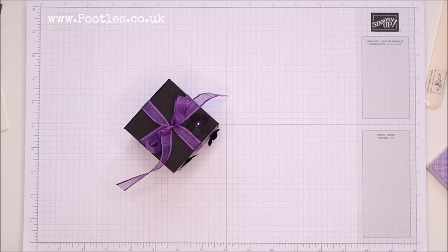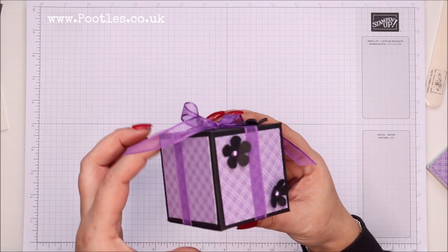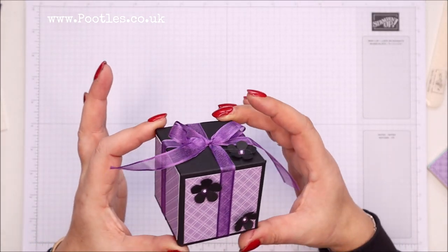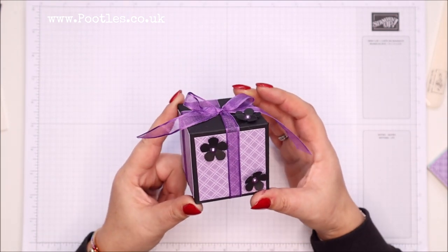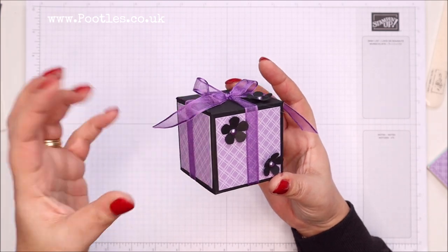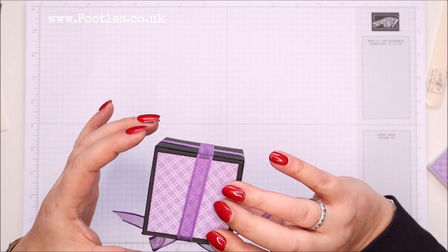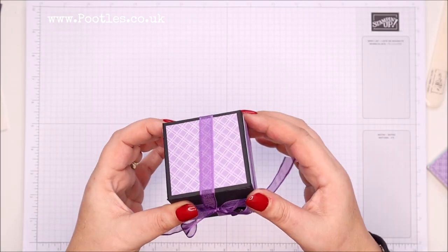Hi there, it's Sam from poodles.co.uk. Thank you very much for joining me today. Today's project is this one, and it's a two and a half by two and a half by two and a half inch cube, six and a half centimeters cubed. It actually holds three jumbo tea lights stacked on top of one another, but I dare not undo this bow because I'll never get it back together again.